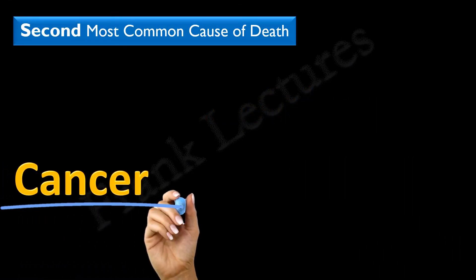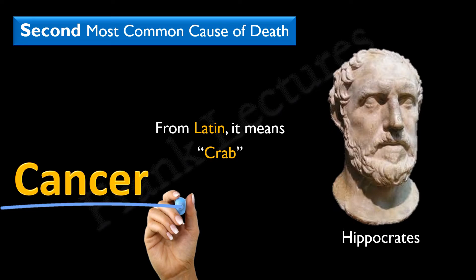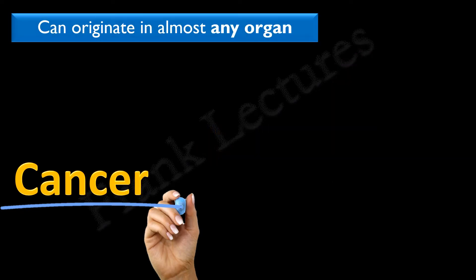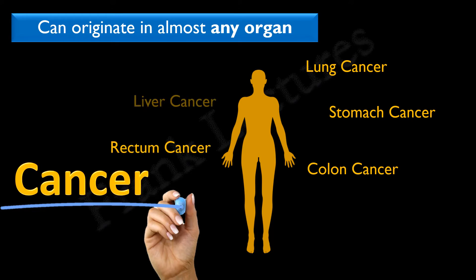Cancer is the second most common cause of death in the world. The term cancer means crab in Latin. This term was coined by Hippocrates in the 5th century BC. Cancer can originate in almost any organ. Main types of cancers you must have heard about are lung, stomach, colon, rectum, liver, and breast cancer.